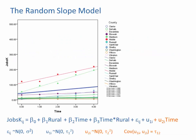Okay, so here is the model and we can see the U1 term is the random intercept term. U2 is the random slope term.